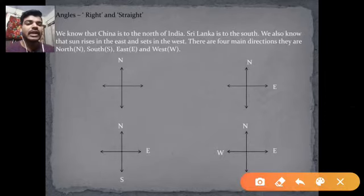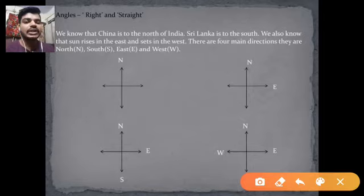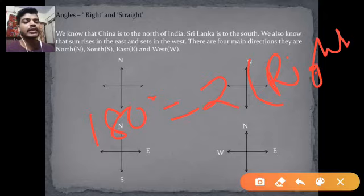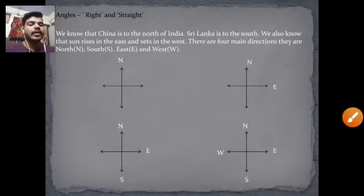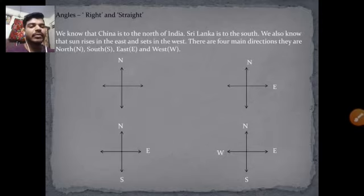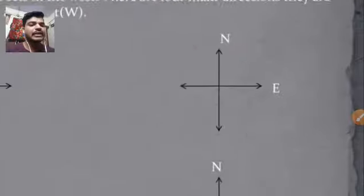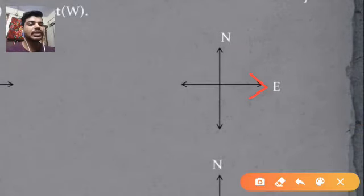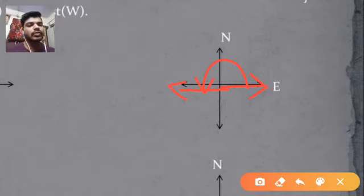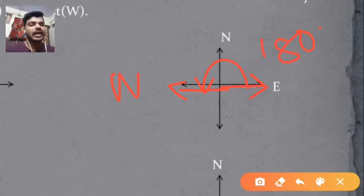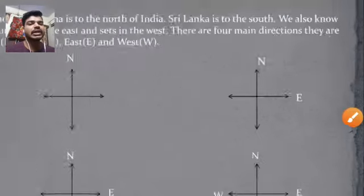Now we will learn about a straight angle. A straight angle is 180 degrees — it is twice a right angle. Using directions: if we are heading towards east and rotate 180 degrees anti-clockwise (or clockwise), we will head towards west. That is our 180-degree angle, or a straight angle.